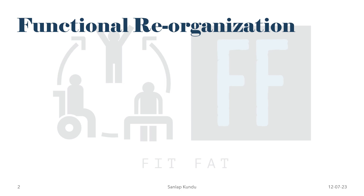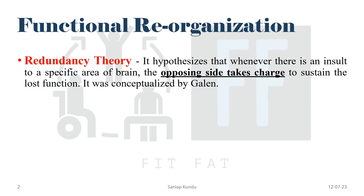There are different theories for neuroplasticity. The first is the redundancy theory, which hypothesizes that whenever there is an insult to a specific area of the brain, the opposing side — the opposite hemisphere — takes charge. We have two halves: the left and right hemisphere. So if there is a problem with a certain area in the left hemisphere, the corresponding area of the right hemisphere will get activated and compensate for that function.